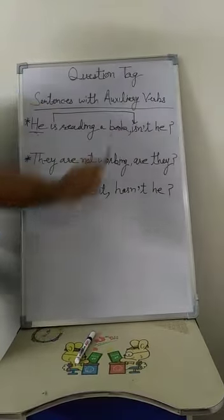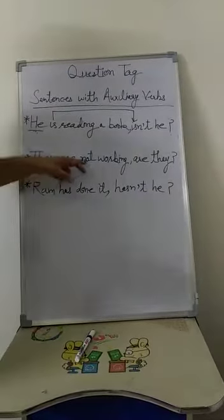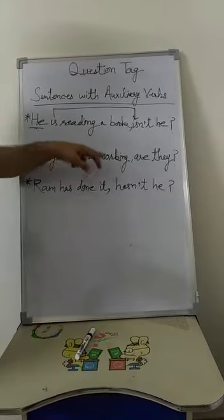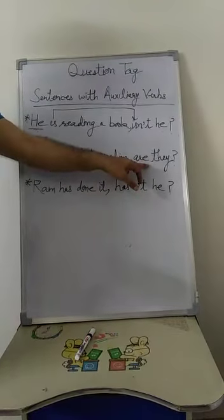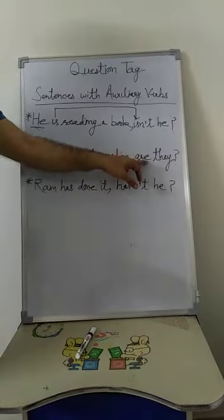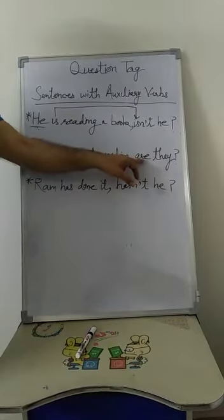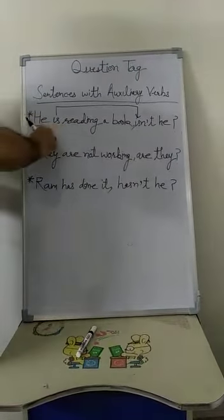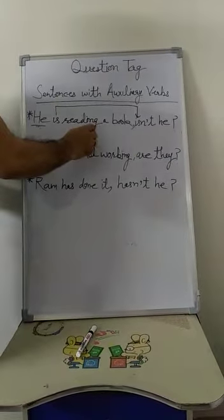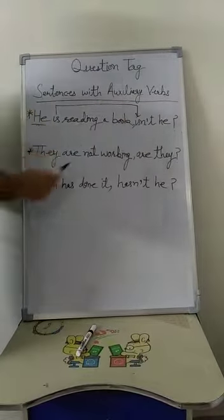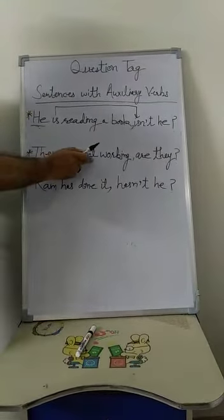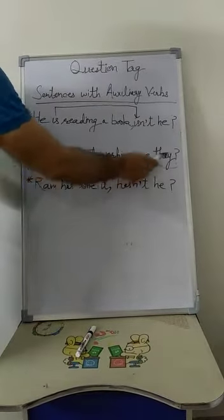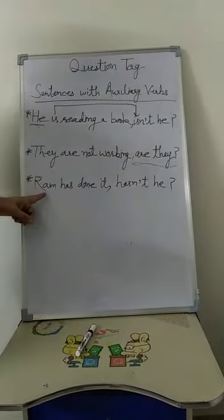Second example: They are not working. Since this is a negative statement, we will have a positive question tag. So here 'not' can't be seen there because it is not used here. So, 'are they?' Here it was a positive statement so the question tag was negative, but here the statement is not positive, it is negative, so question tag here is positive.